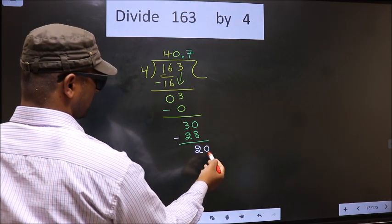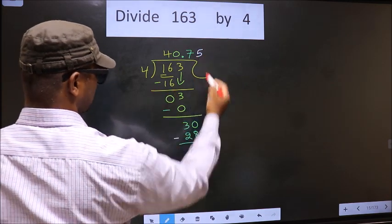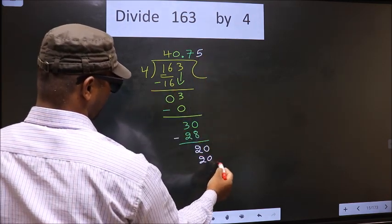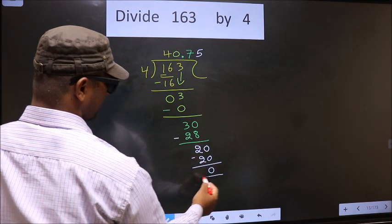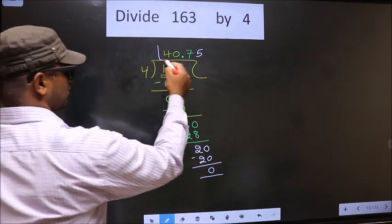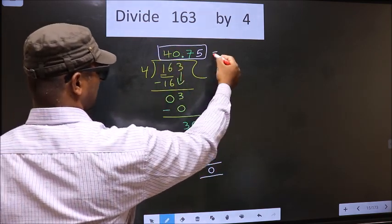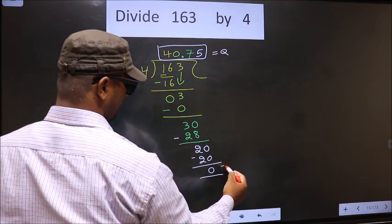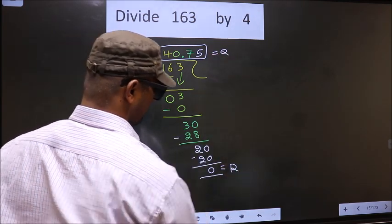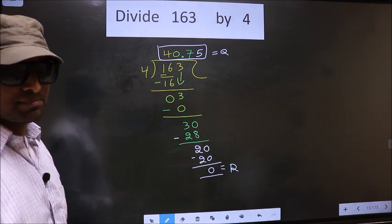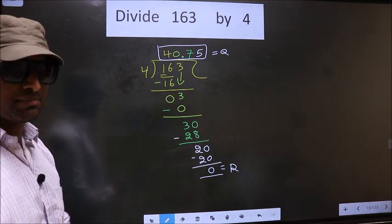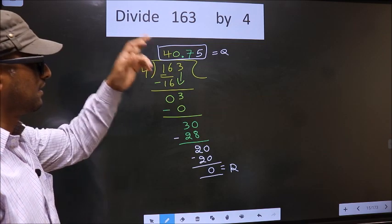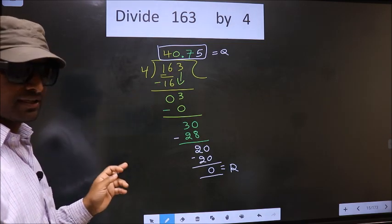Now you take 0. When do we get 20 in 4 table? 4 times 5 is 20. Now you subtract. You get 0. So this is our quotient and this is our remainder. Did you understand where the mistake happens? You should not do that mistake. Am I clear?